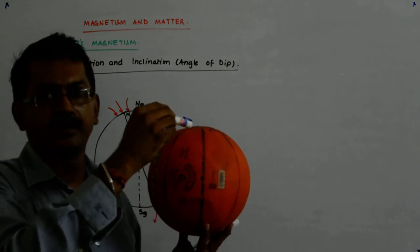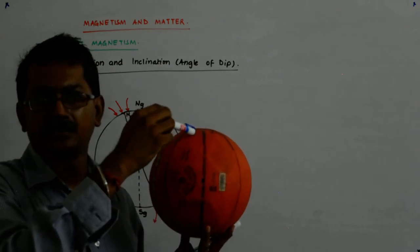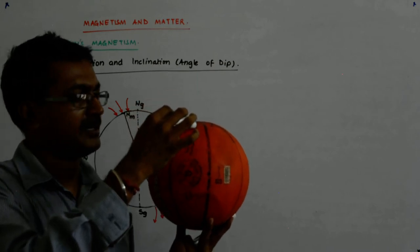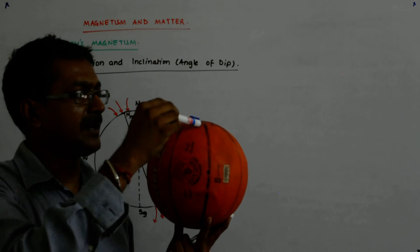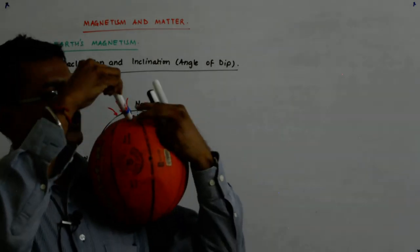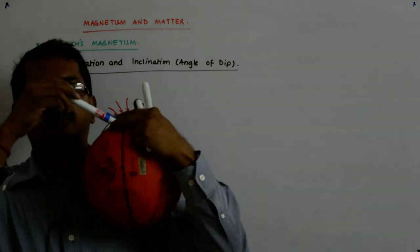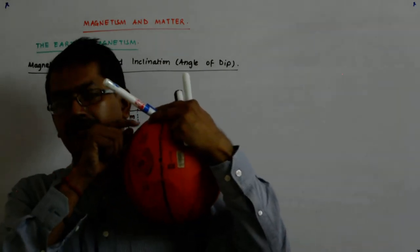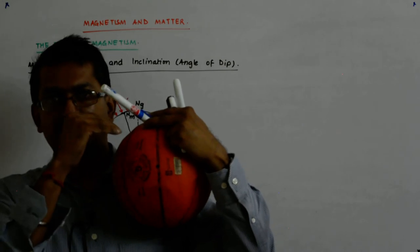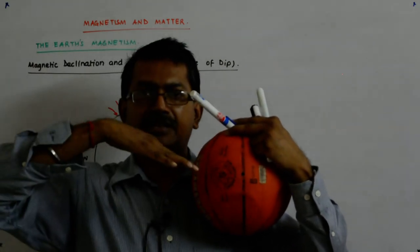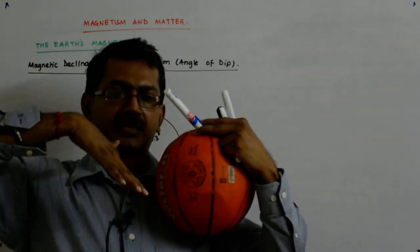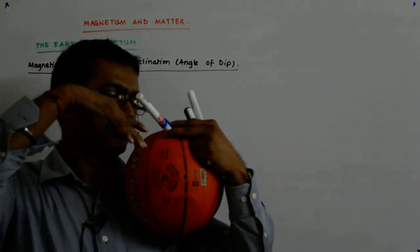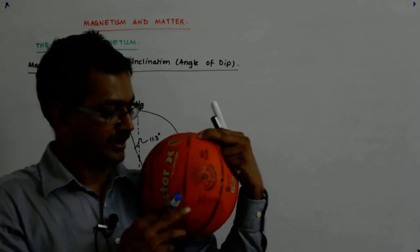It will be dipping like that, making some angle here. What do we call this angle? If you see it like that, this angle will be called I - this is the angle of dip. This is how your horizontally hinged magnetic compass dips or rises.